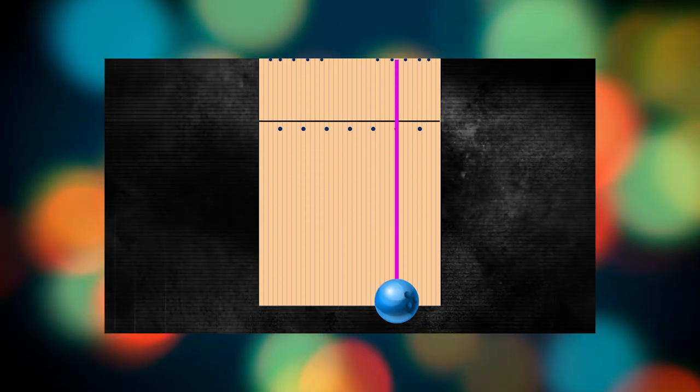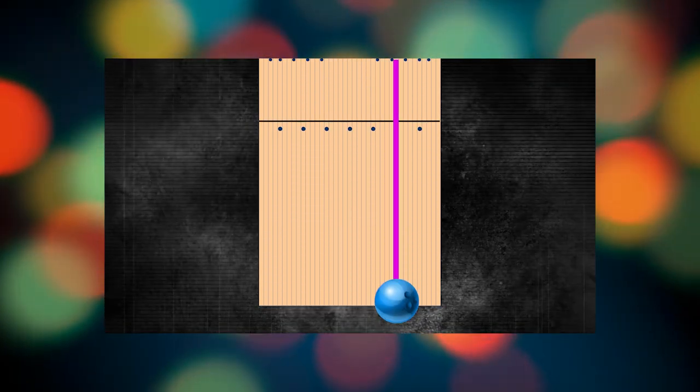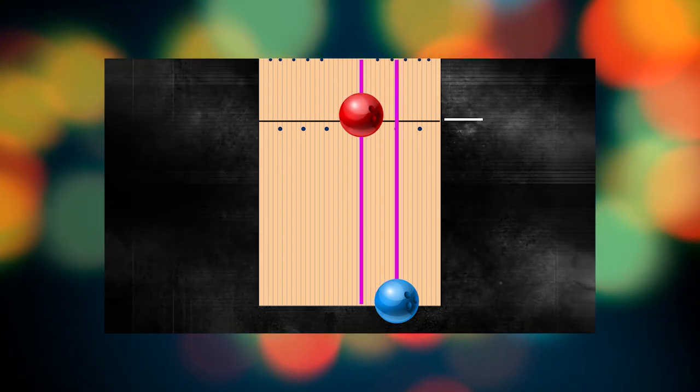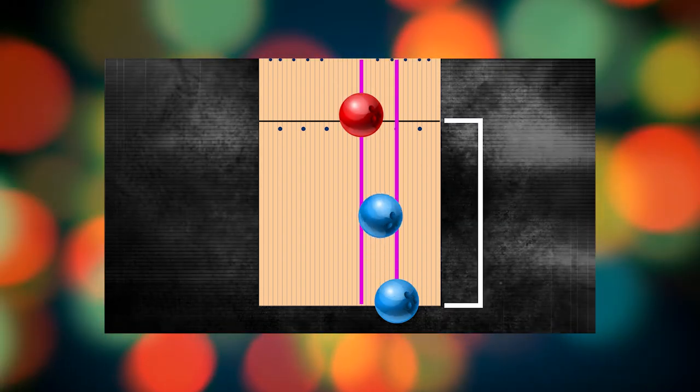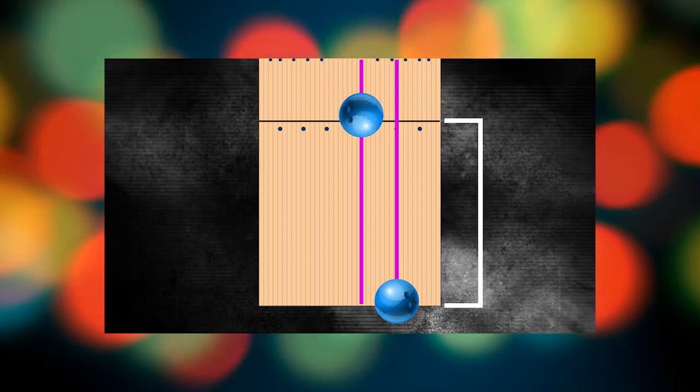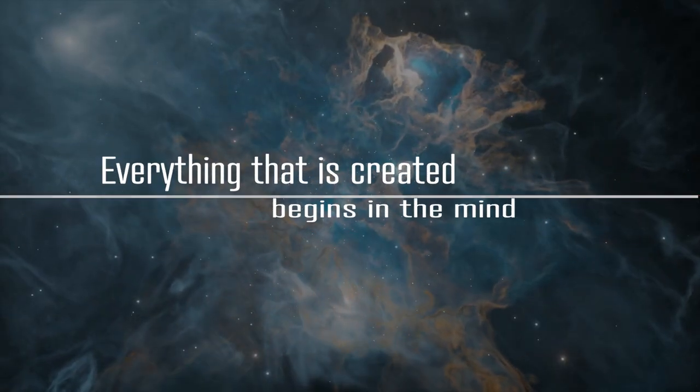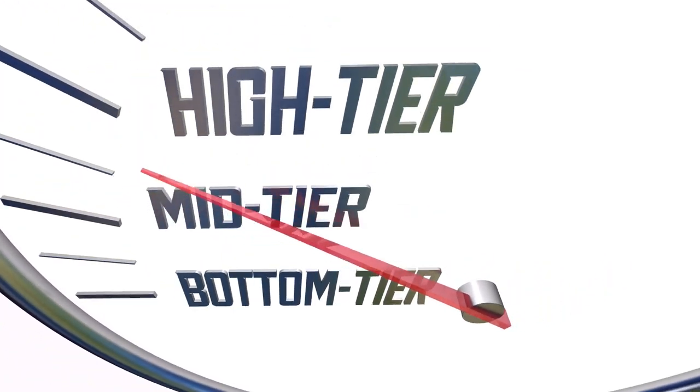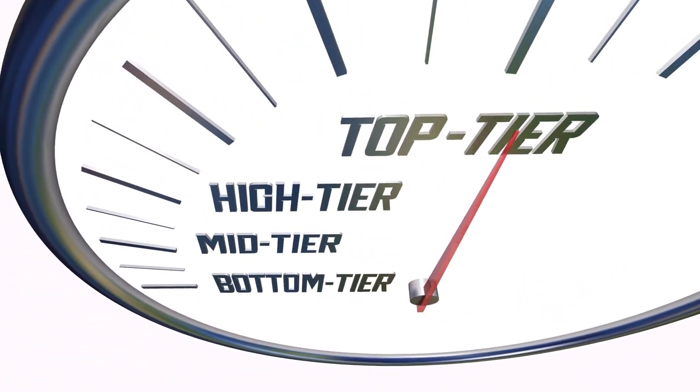Think about that being the same distance as the back of the approach to the foul line. If you were to place a ball on the 10 board right at the end of the approach and put a ball on the foul line at 17 and a half, you can really see how little that ball moves from right to left in the last 18 feet. Now that's the optical illusion of bowling. Everything that is created begins in the mind. Are you ready to create the best version of yourself on the bowling lanes? If so, let's begin.